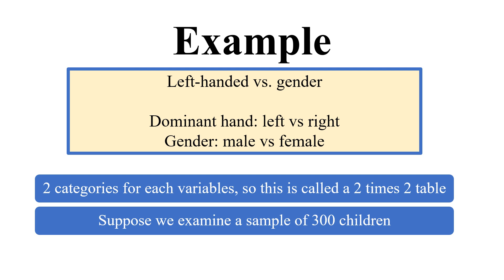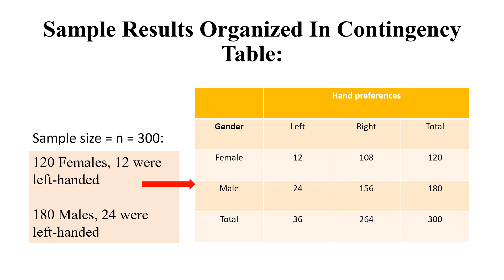Let's look at an example. We have two categories for each variable, which means we have a two-by-two table. The two categories are dominant hand — left or right — and gender — male versus female. Suppose we examine a sample of 300 children and organize the sample results in a contingency table.